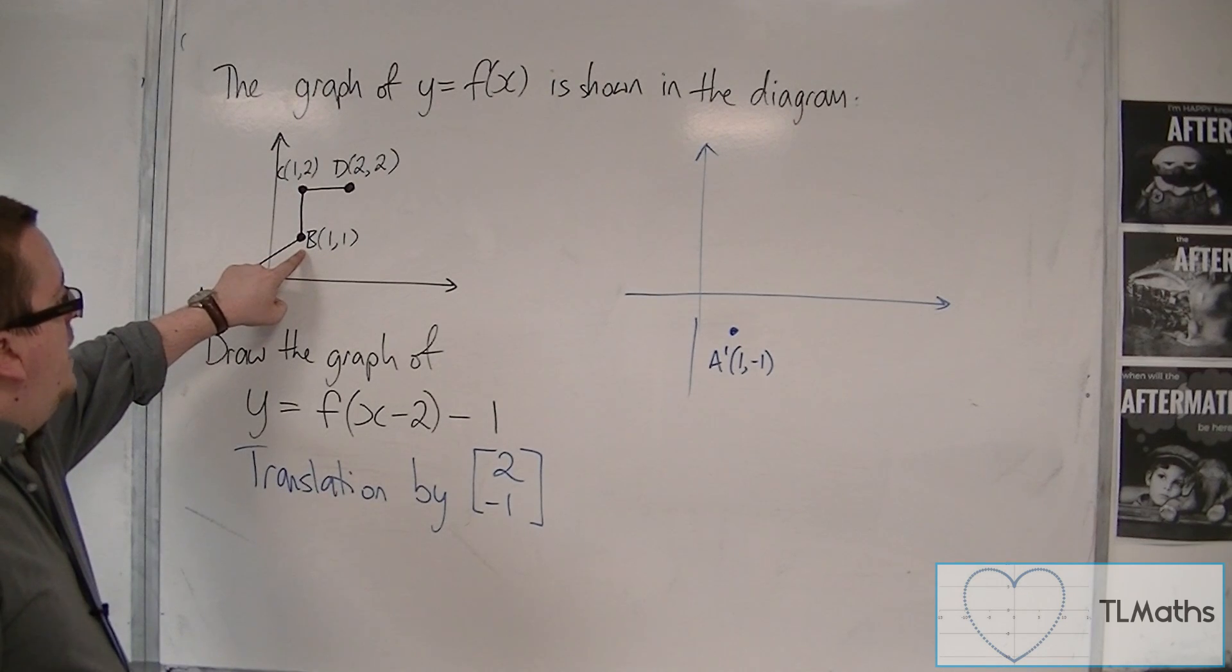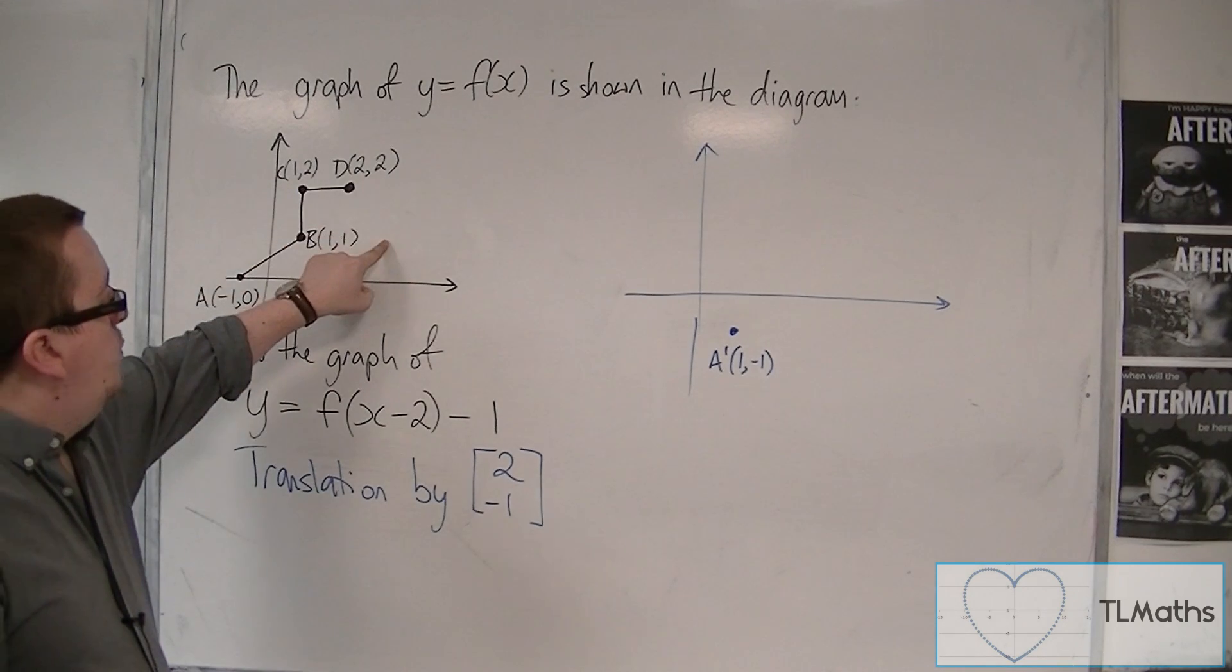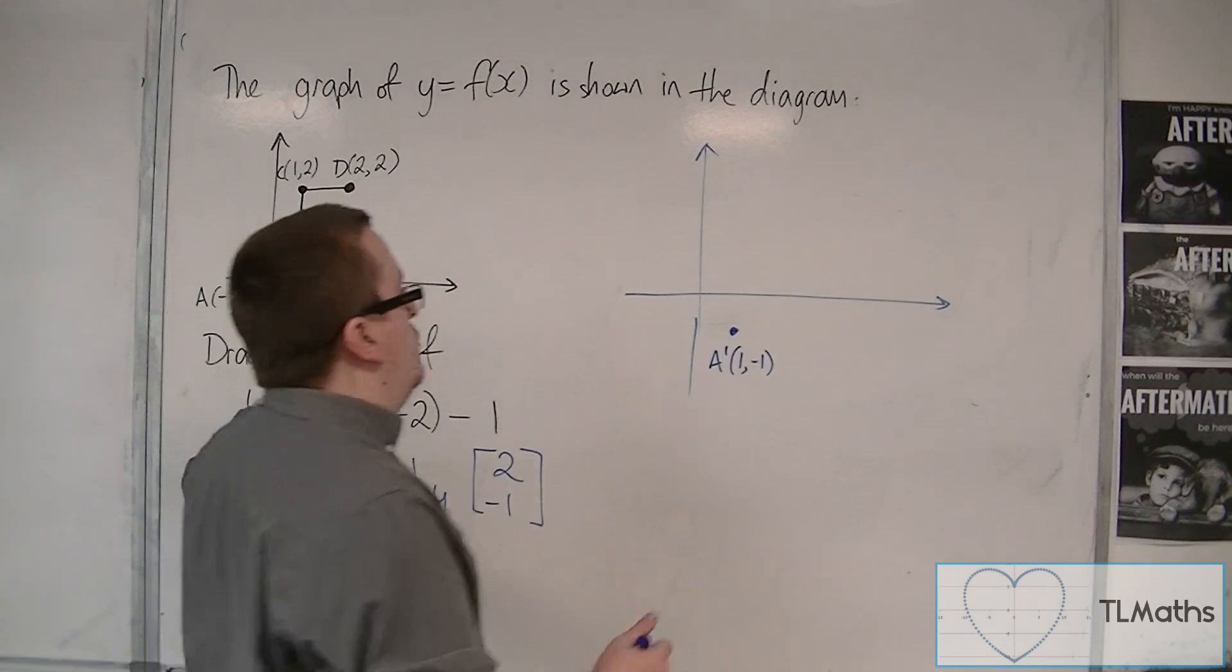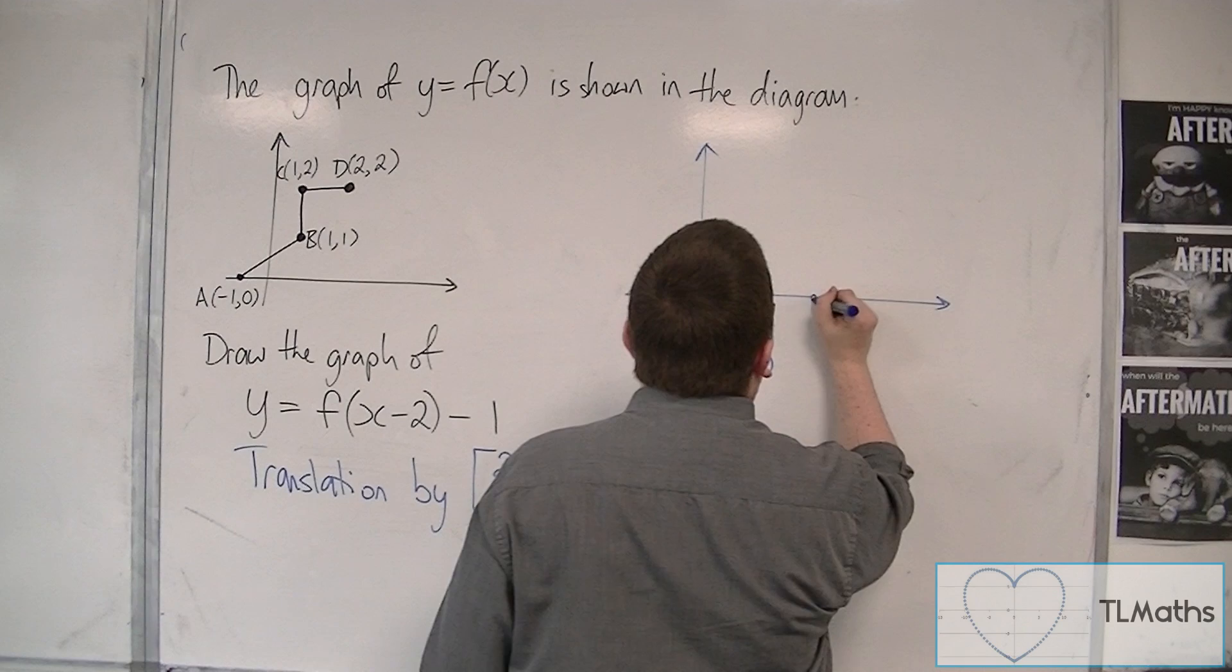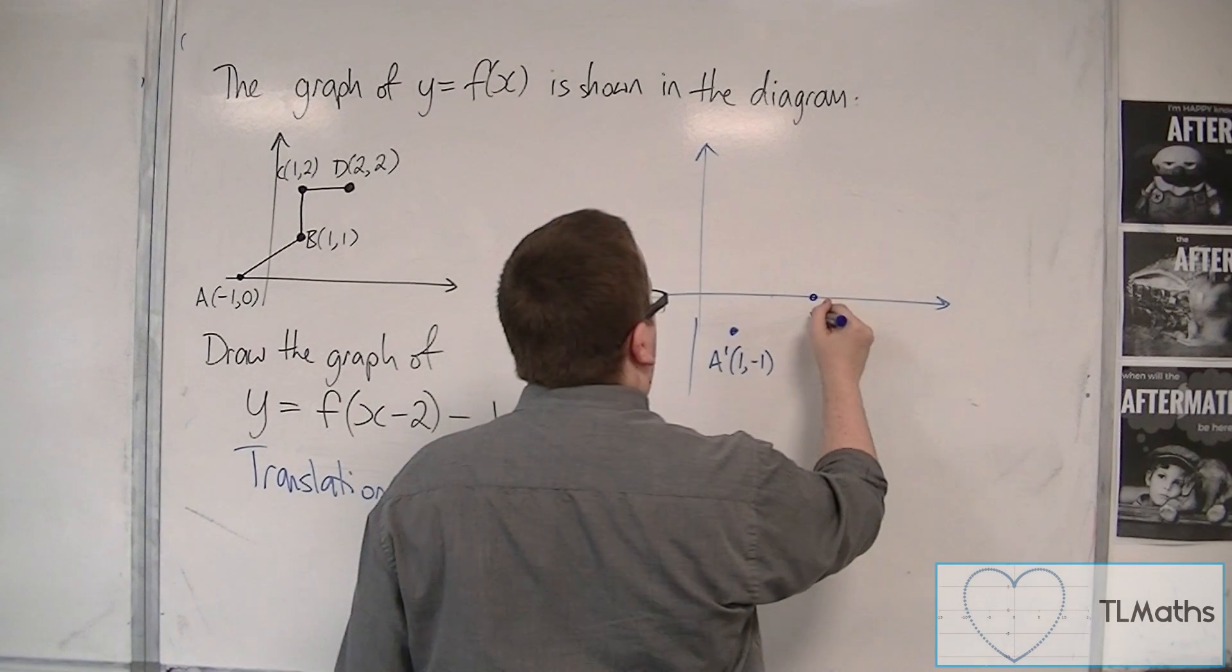Point B goes 2 along, so to 3, 1, and then 1 down, so to 3, 0. So let that be 2, and then that can be 3, so 3, 0. So that's B prime.